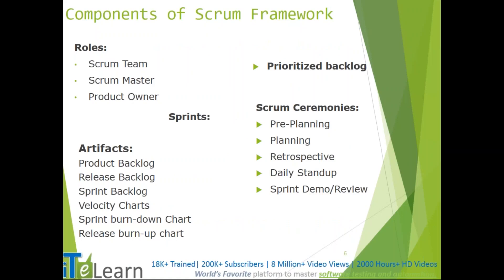Let's look at each role's responsibilities, starting with the Scrum team — developers, QAs, architects, or whoever works on that piece of code or product feature. They are responsible for delivering a shippable product for that particular sprint, coming up with innovative ideas to delight the customer, and committing to that sprint duration without disturbance and with a quality product.